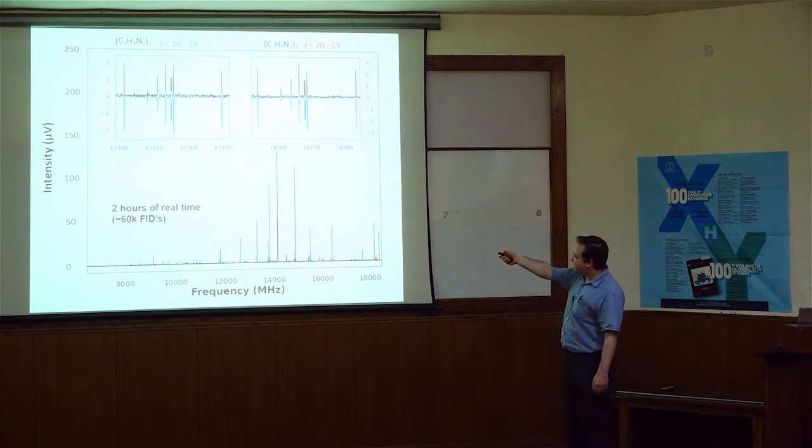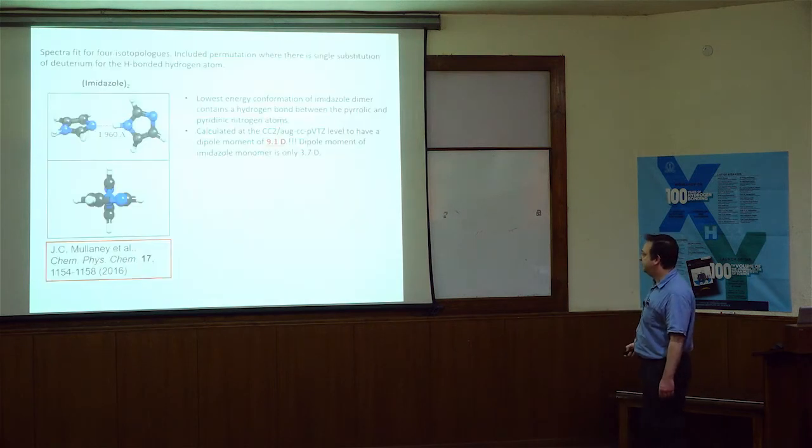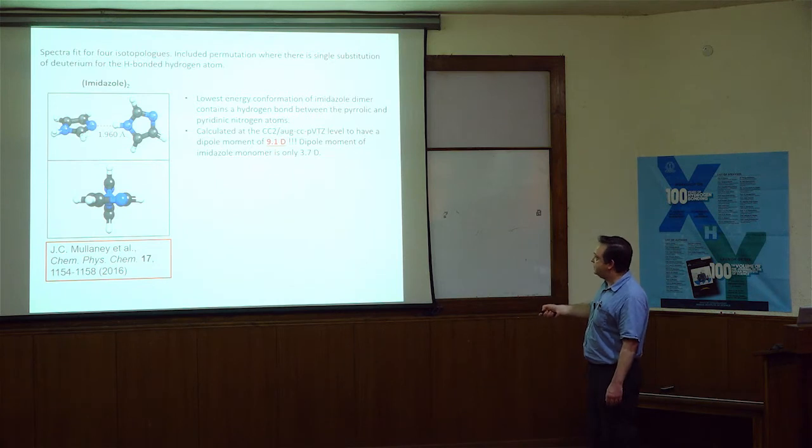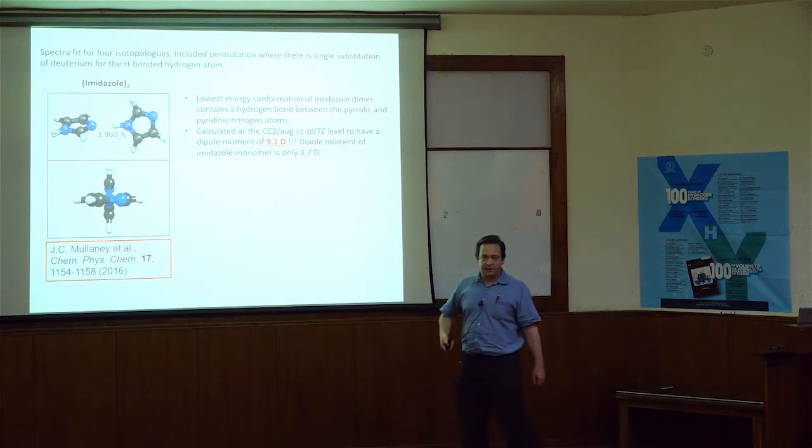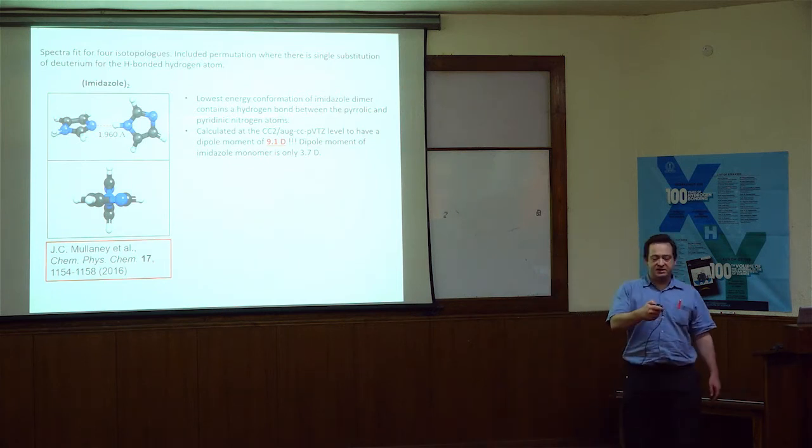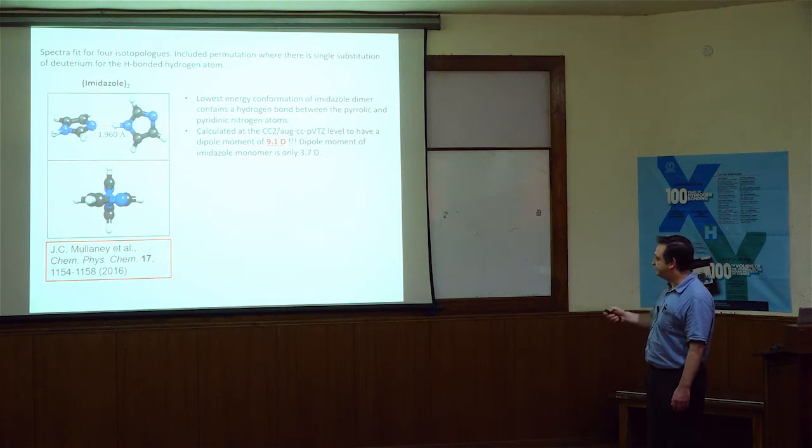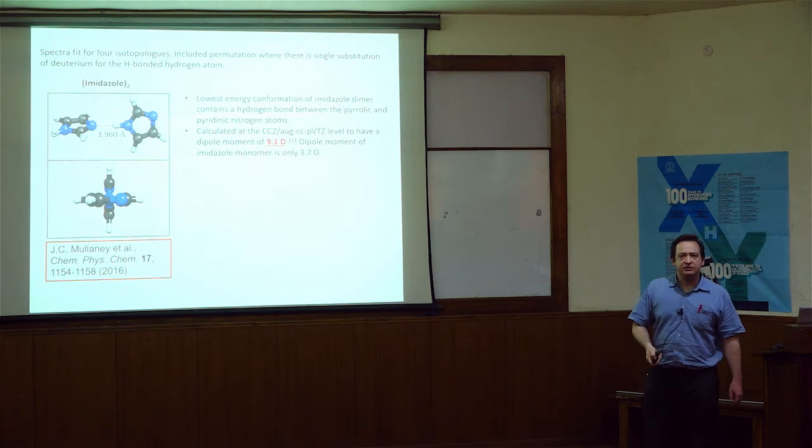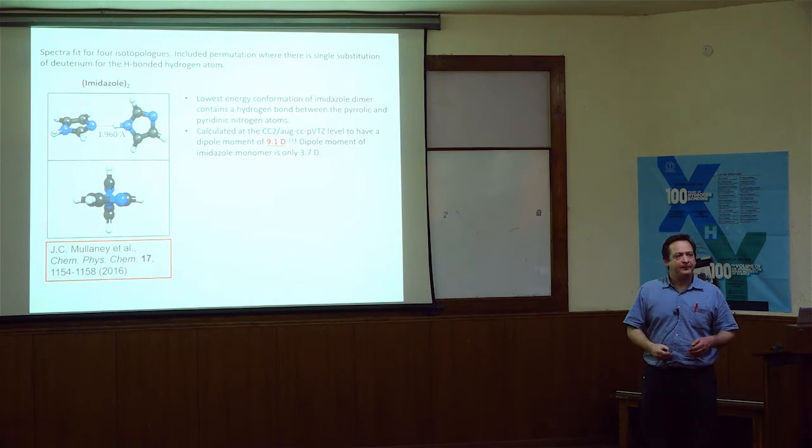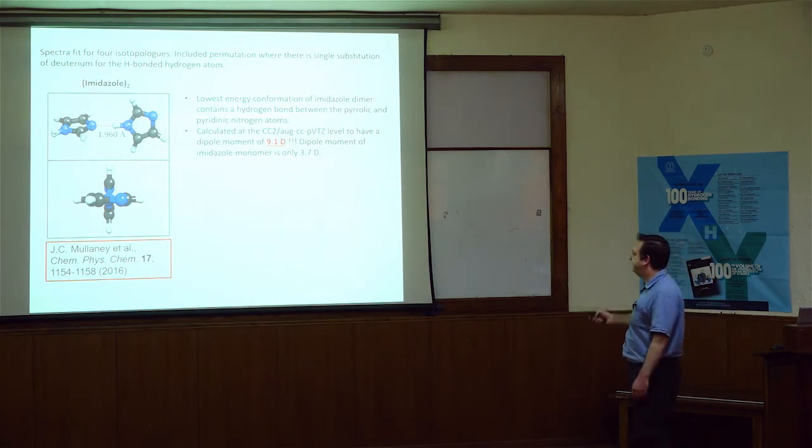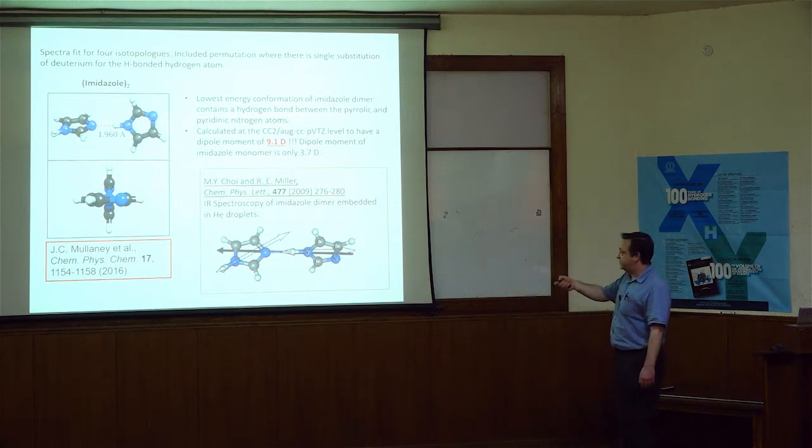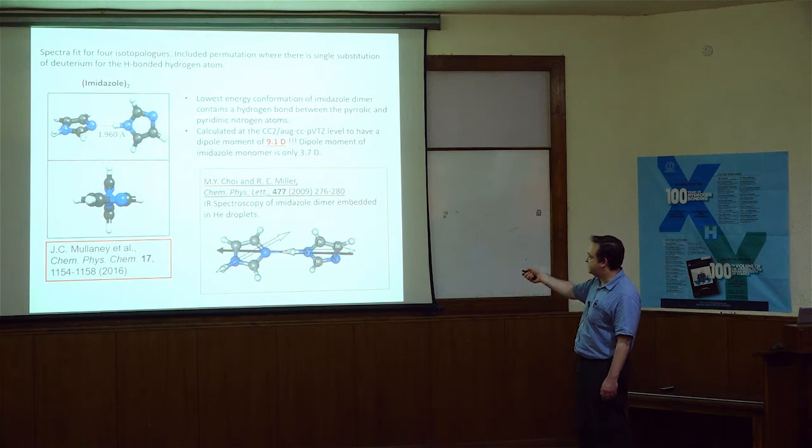The imidazole dimer - what you see here is the K equals 1 lines are the outlying ones, and in the center you've got K equals 0, 2, 3, 4, 5. It's very near prolate, this molecule. We wrote this up in 2016 having done quite a lot of isotopic work on it. We deuterated the imidazole around here and then at this key hydrogen bonding site. What we discovered is that this is the lowest energy geometry. This is the structure of the molecule that is the carrier of the spectrum we see. One reason this is intense in our spectrum is this has a dipole moment of 9 Debye. This is really big. Our method is more sensitive to things that have big dipole moments. As it happens, this wasn't the first observation of this molecule. Choi and Miller saw this in 2009 in imidazole embedded in helium droplets. They noticed this big dipole moment as well.